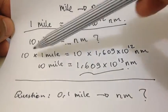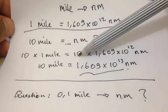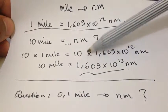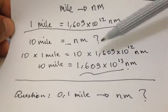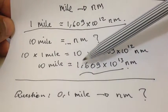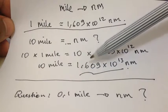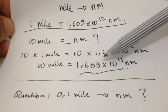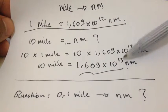And it's equal to, we put here 10 and we put here 10 as well and multiply it with this number. And then 10 miles is equal to 1.609 multiplied by 10 power 13.